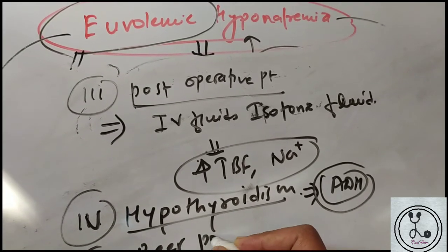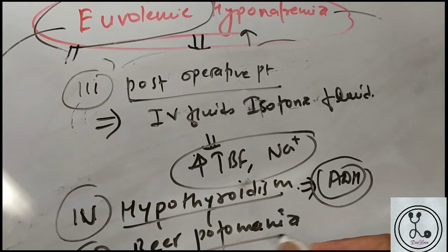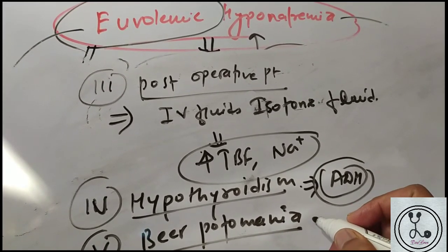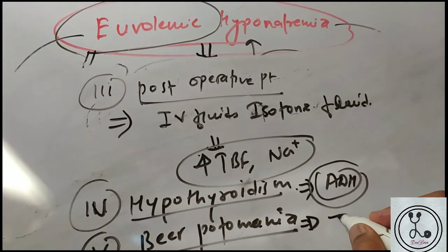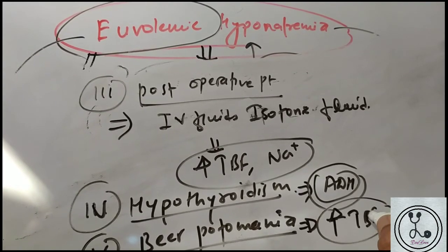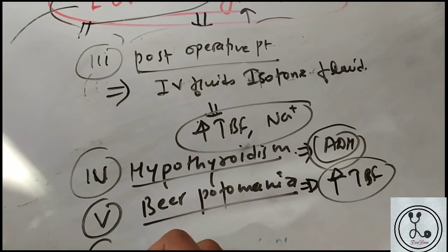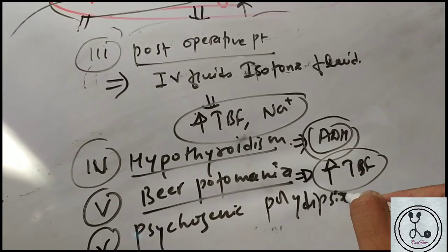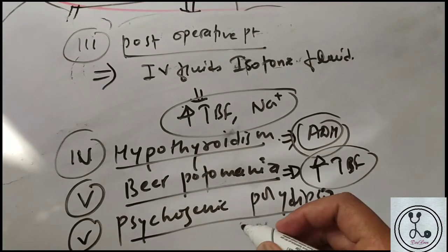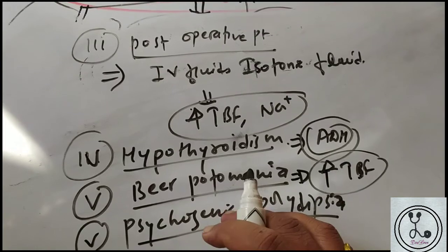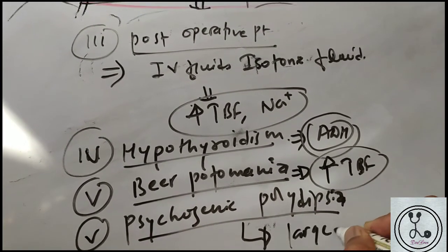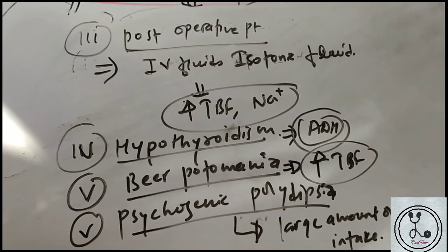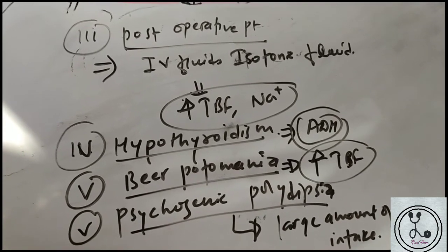Additional causes include beer potomania — where excessive beer intake increases total body fluid leading to euvolemic hyponatremia — and psychogenic polydipsia, where a person with compulsive thirst takes large amounts of water, such as 10 to 12 liters per day, causing hyponatremia through excessive water intake.